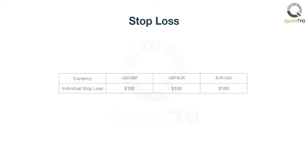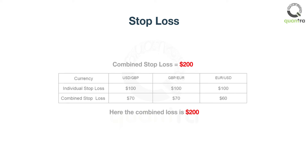Let us say that you are trading three pairs: US dollar to pound sterling, pound sterling to euro, and euro to US dollar. The individual stop loss for each pair is $100, meaning you would stop trading a particular pair if the loss exceeds $100. In another case, if the overall portfolio stop loss is $200, then when you incur a combined loss of $200, you will have to stop trading all three pairs, even if the individual stop loss criterion is not triggered.